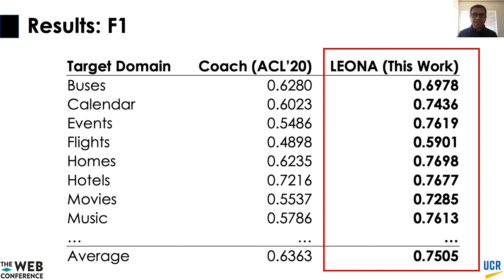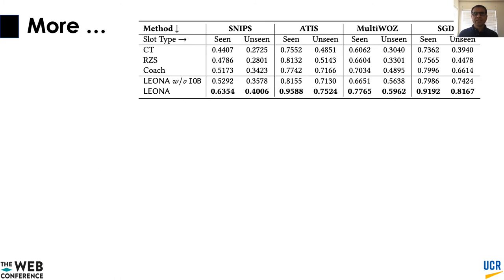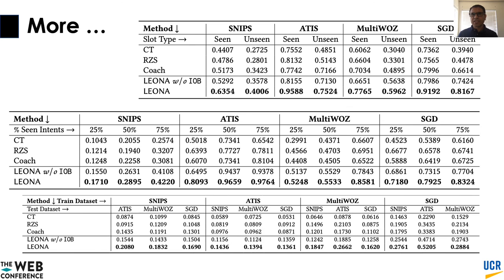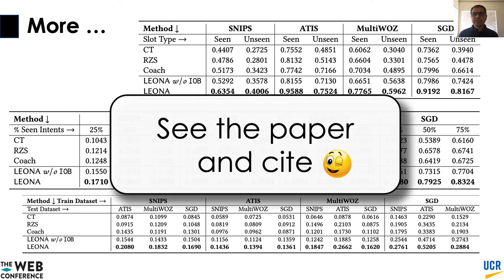The main takeaway from this result is that our model outperforms the other state-of-the-art models on every single domain. This performance is consistent across all other datasets in a wide range of experimental setups. We have several other interesting experimental setups and analyses in our paper, such as results on seen and unseen slot types, varying the percentages of seen and unseen domains, and training models on one full dataset and testing on all other datasets.